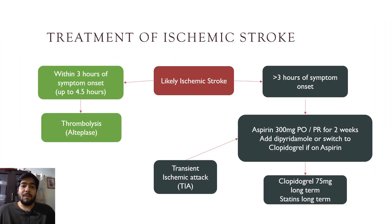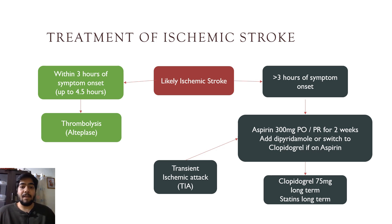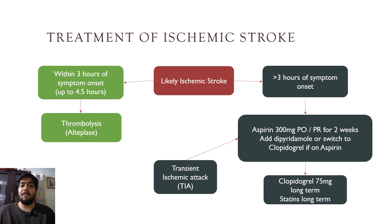For treatment of ischemic stroke, if the patient presents within three hours of symptom onset — or up to 4.5 hours — you can go for thrombolysis with alteplase. If the patient presented after three hours or woke up with stroke symptoms, thrombolysis is not appropriate.